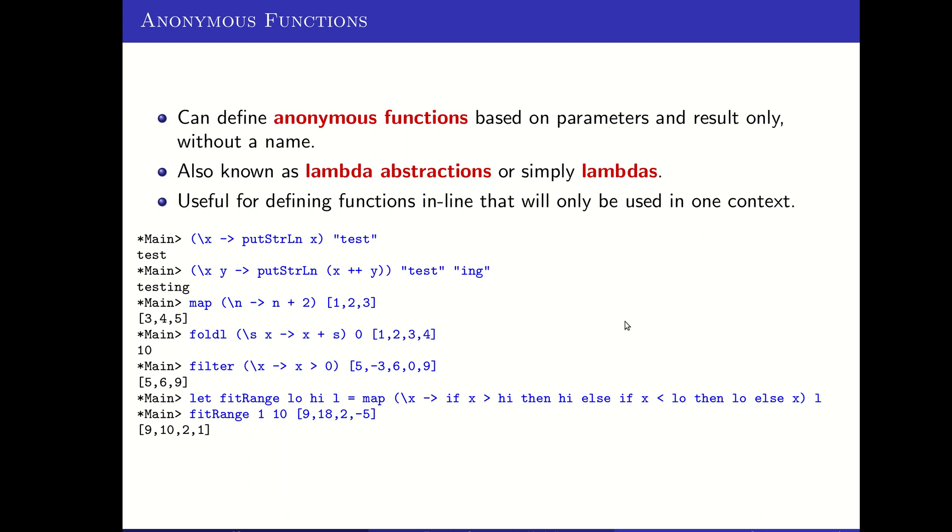One type of function that's often available in functional programming languages and is available in Haskell are anonymous functions. These are functions given only parameters and the expression that would provide the result without any name designated for that function.